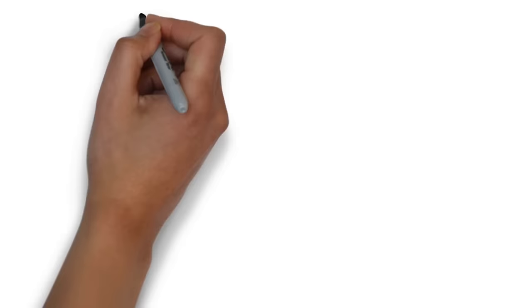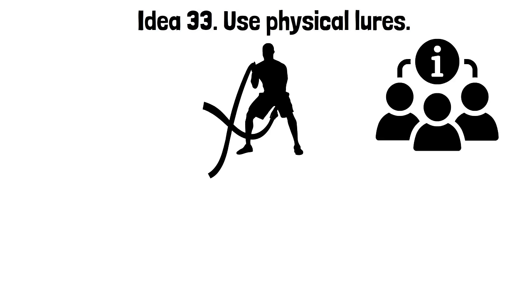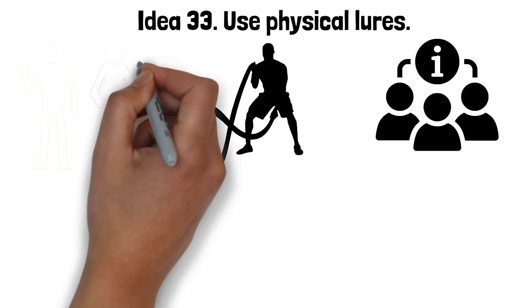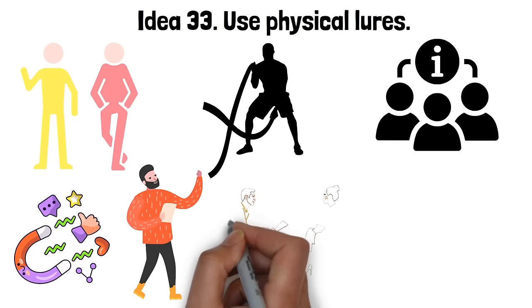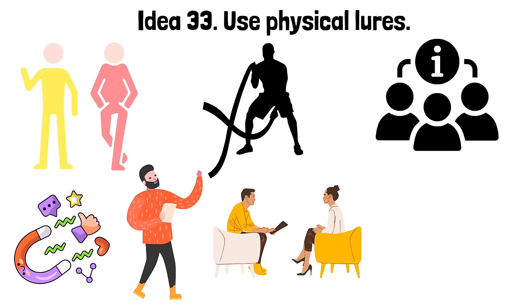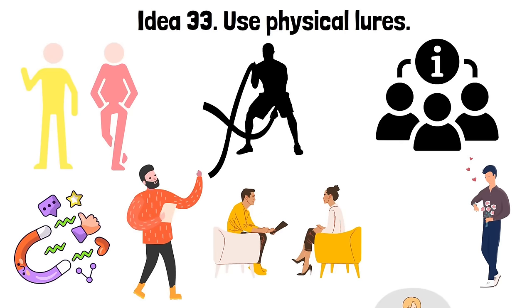Idea 33. Use physical lures. Physical lures play an important role in the game of seduction. They are not just about raw physical attractiveness, but also involve the way one carries themselves, how they dress and their non-verbal communication. These aspects can create a magnetic pull towards the individual. It's about showcasing your best features and maintaining an alluring presence that catches the eye. Your posture, your voice, even the way you move can be hypnotic. A well-placed touch or a lingering look can carry potent messages, sometimes more powerful than words. This tactic is about mastering the art of silent communication, using your body to create an irresistible draw.